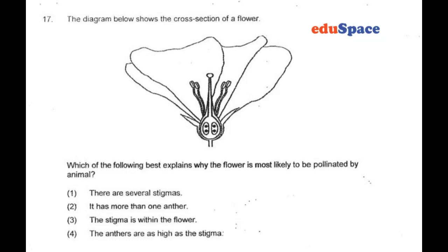In question 17, we have a question on reproduction in plants: which of the following best explains why the flower is most likely to be pollinated by an animal? In this case, we can see that the stigma is within the flower — it's inside the flower — so it requires animals to fly inside the flower in order for pollination to take place.